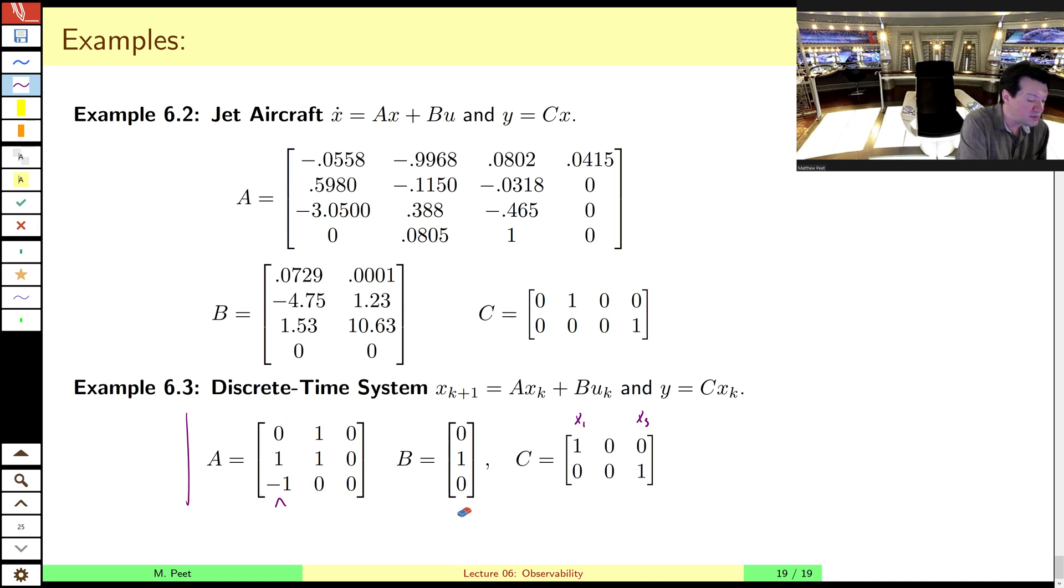And likewise, is the system observable? Well, we can only observe states one and states three. And so the question is, can we also observe state two? Well, let's look at the dynamics of state two. State two, it depends on state two, which we can't measure, but it also depends on state one, which we can measure. So through a single mixing, then the state two is also observable and we can actually observe all three states. So this one is controllable and observable.